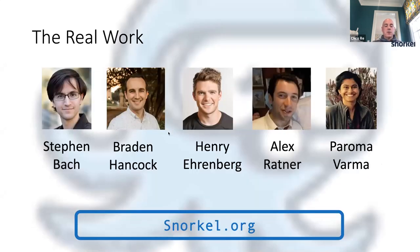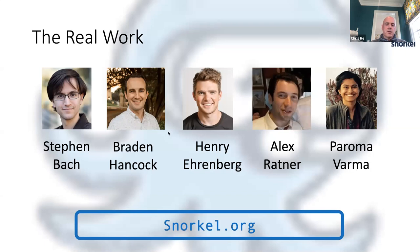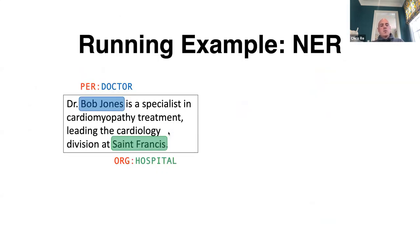The students who really did the work were Steven Bach now at Brown, Braden, Henry, Alex, and Paroma. You can check out their website snorkel.org. As a concrete example for knowledge graph relevant projects: suppose you want to do named entity recognition — go into text and extract people, places, and things, perhaps to fill out a knowledge graph. Here we see Bob Jones, a doctor, and we want to be able to get organizations and find interesting relationships between them.